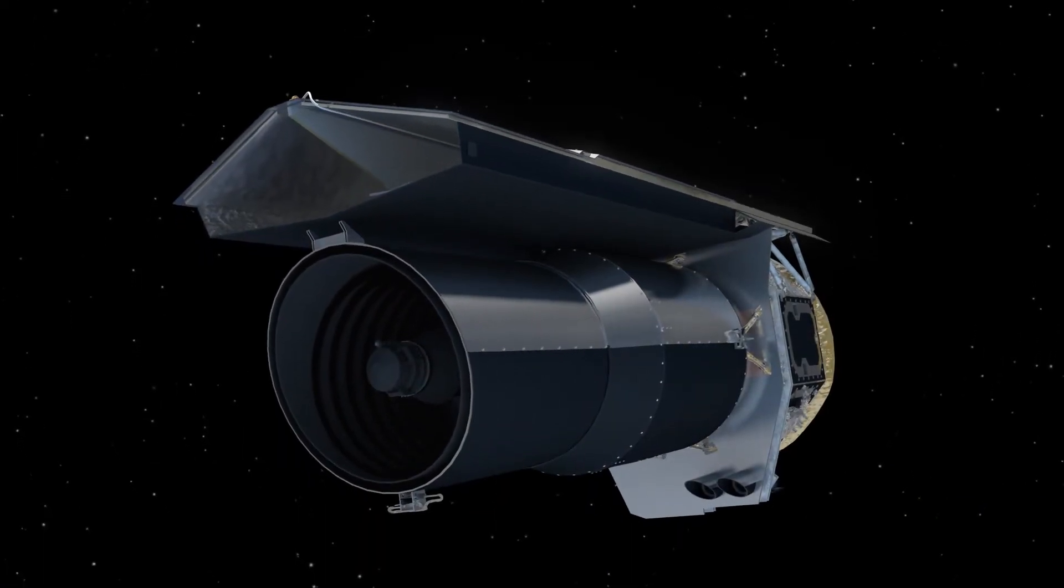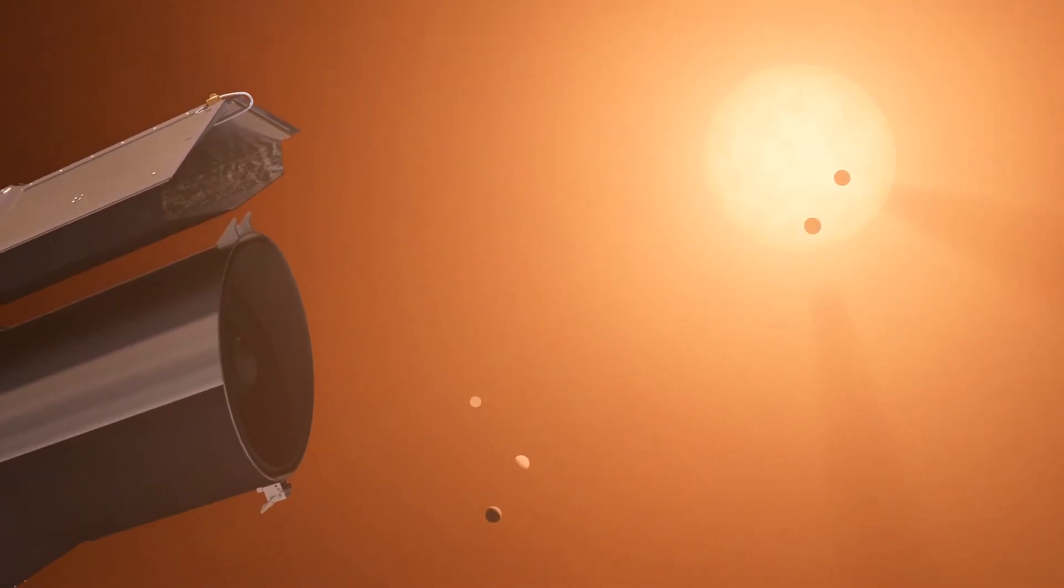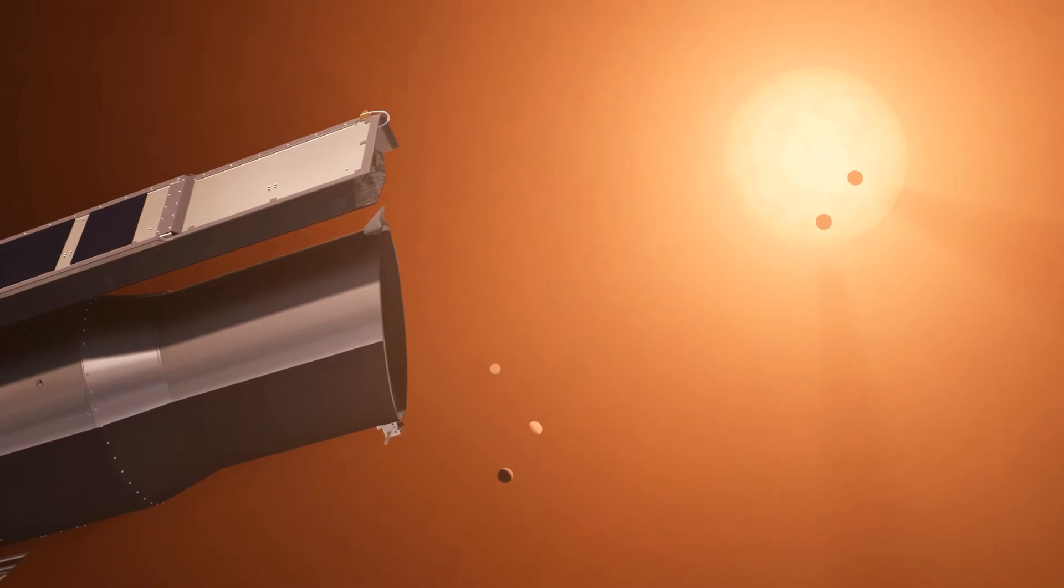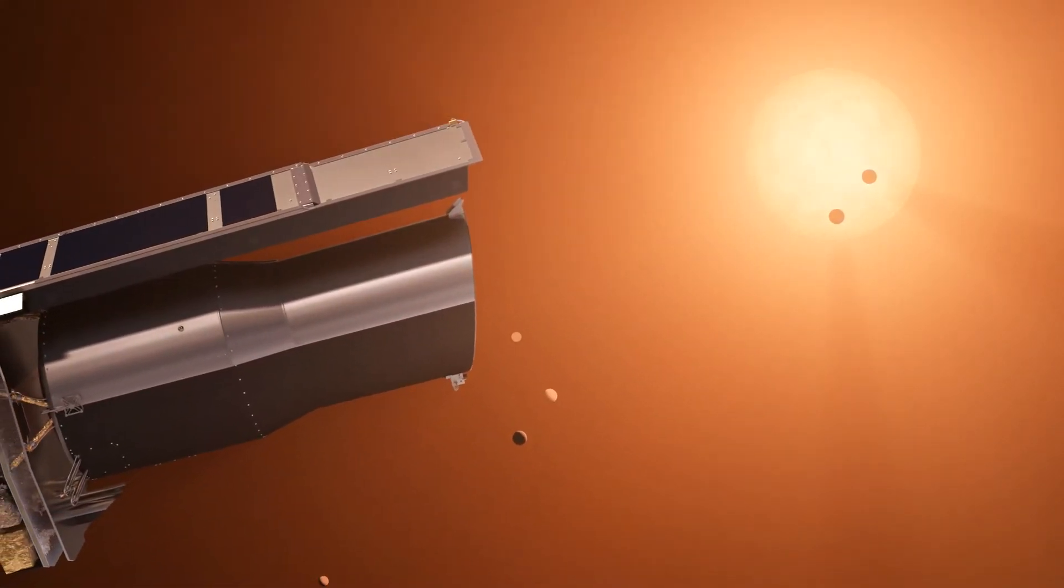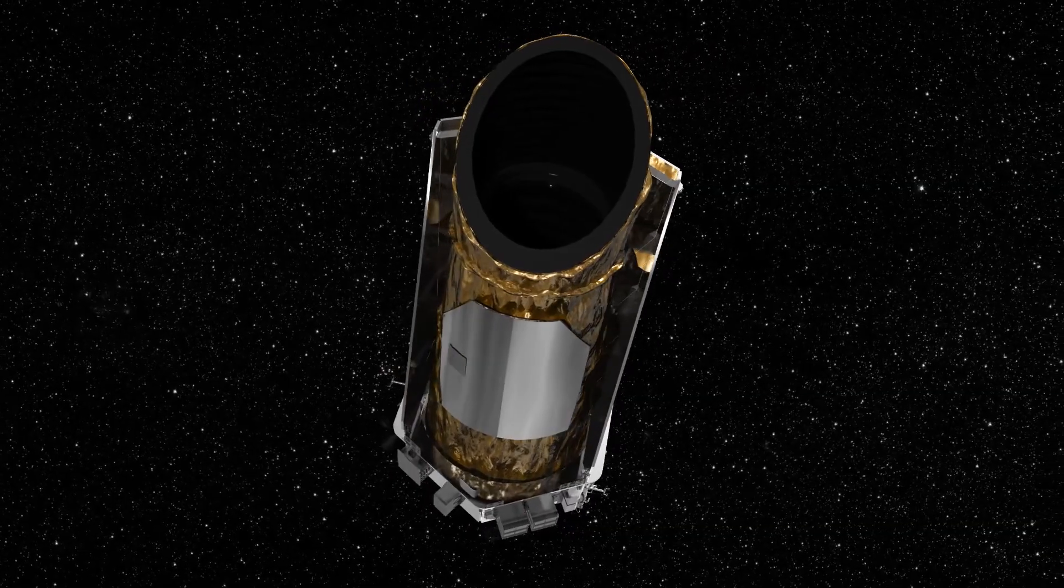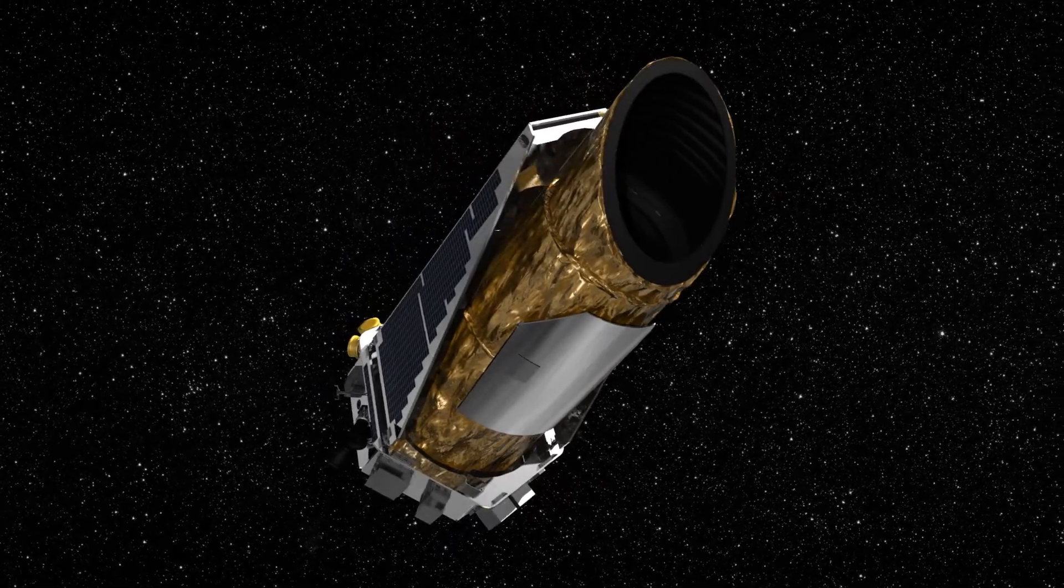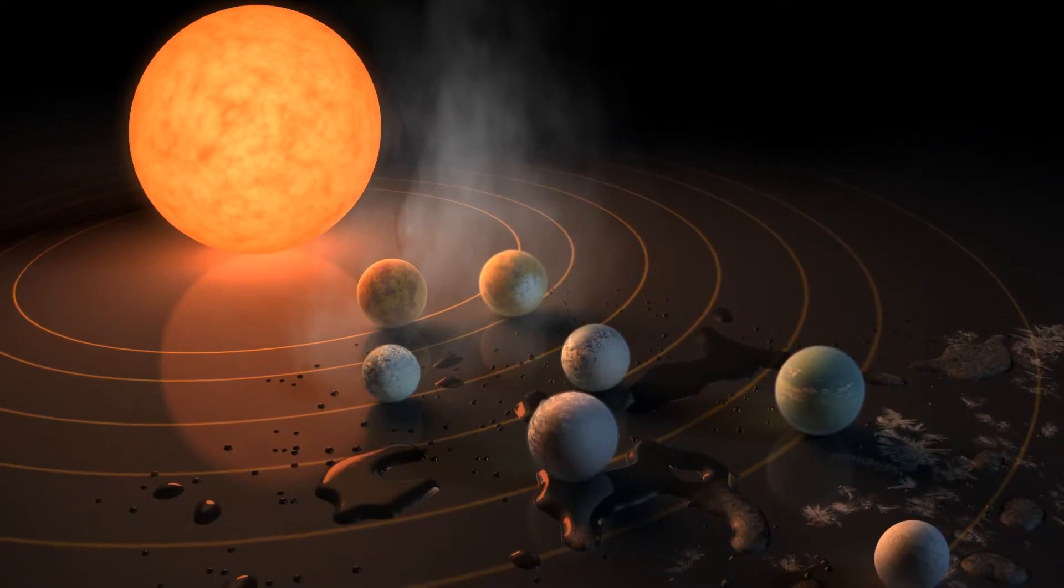Spitzer is particularly sensitive to the infrared glow from ultra-cooled dwarf stars like this one. To date, it's devoted over 1,100 hours to accurately measuring the transits and timing for this system alone. Combining that data with a Kepler campaign and ongoing observations from many other telescopes has enabled the most precise measurements of mass and density ever made for a system of exoplanets.